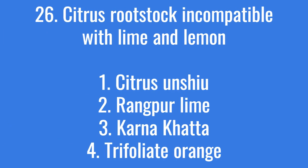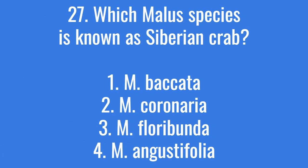Which citrus rootstock is incompatible with lime and lemon? The right answer is option 4: trifoliate orange. Which Malus species is known as the Siberian crab? The correct answer is option 1: M. baccata.